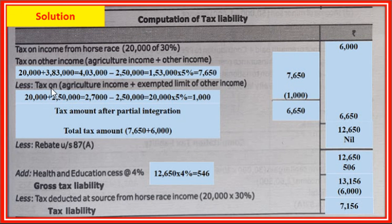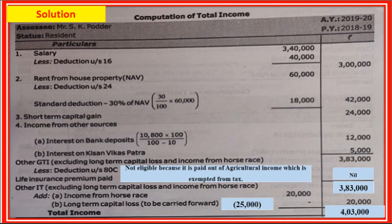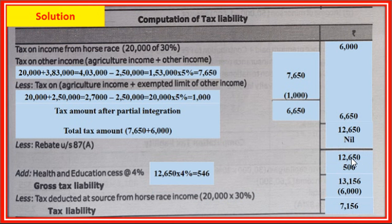Step two: less tax on agriculture income and basic exemption limits. Add agriculture income 20,000 to get 2,70,000. Then 2,70,000 minus basic exemption limit 2,50,000 equals 20,000, taxed at 5 percent equals 1,000. So tax cut is 1,000. Balance tax on other income: 7,650 minus 1,000 equals 6,650. Total gross tax: 6,000 plus 6,650 equals 12,650. Rebate under section 87A applied at the balance - 12,650.